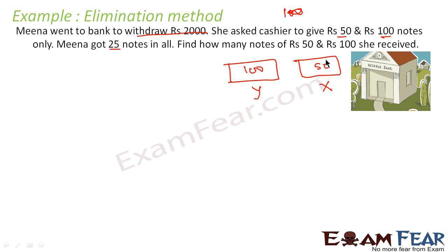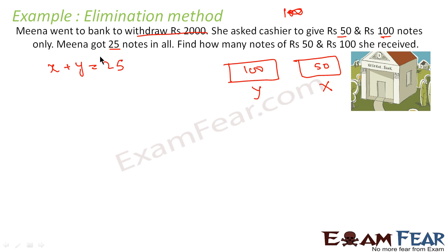The question says the total number of notes is 25. So number of 500 rupee notes (x) plus number of 100 rupee notes (y) equals 25. That is x plus y equals 25.